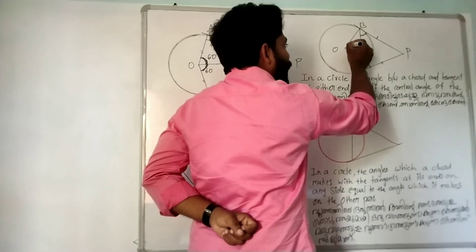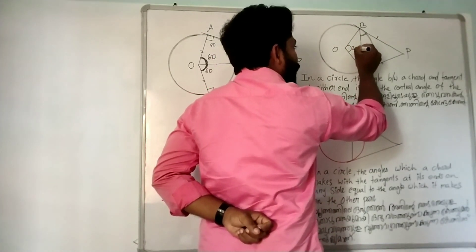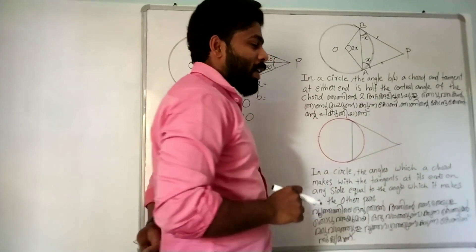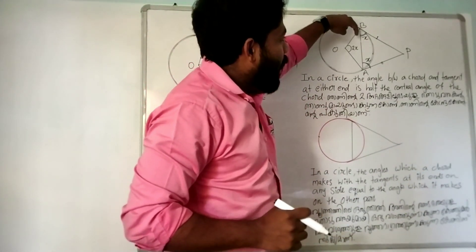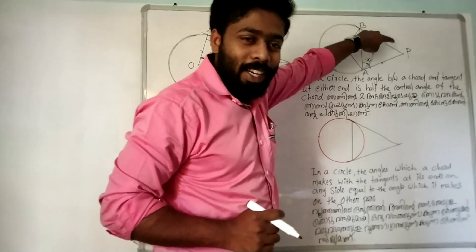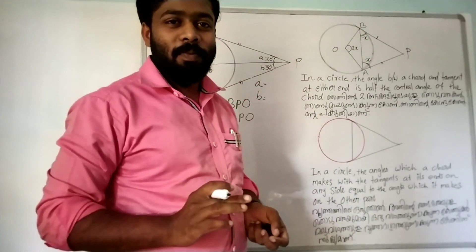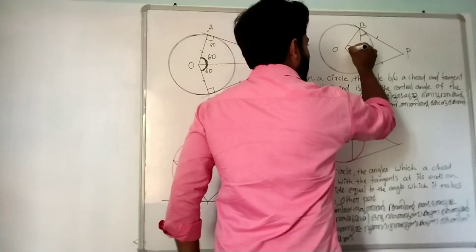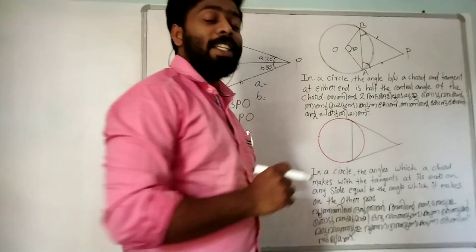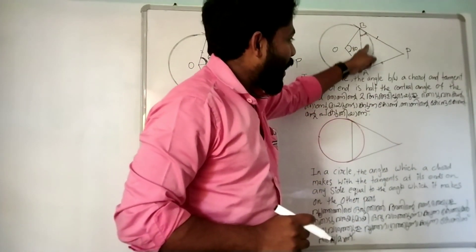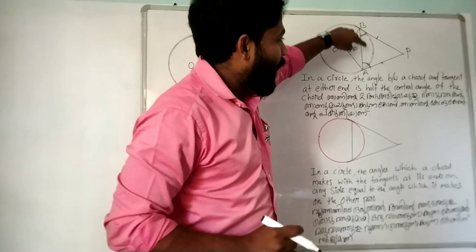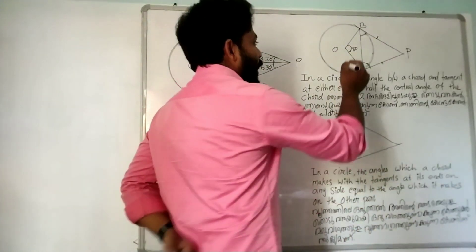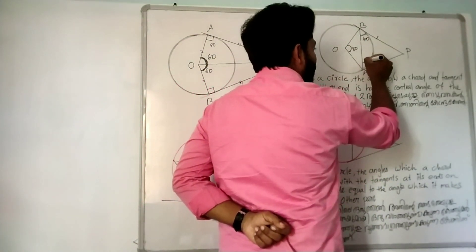The answer will be the same way by the center angle. Suppose this is a 2x angle — the center angle is 2x, which corresponds to x degrees. That means this chord's center half-angle: the tangent angle is the same as x. Let me give you an answer — suppose this is 80 degrees at the edge. If you want to make a tangent, it is 40 degrees.